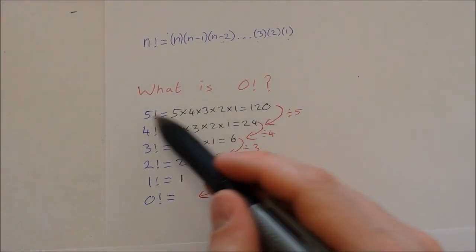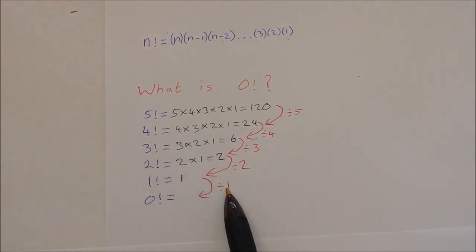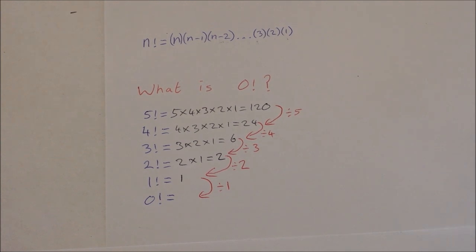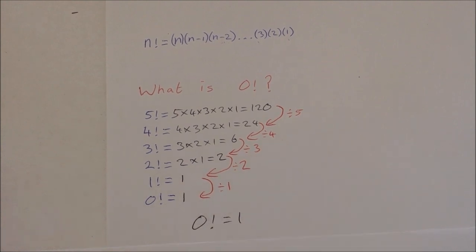So we've divided by 5 up here, by 4 up here, by 3 here, by 2 here. So I'll divide by 1 here following that pattern. 1 divided by 1 is 1. So that means 0 factorial is equal to 1. So that does come up sometimes. You'll come across a 0 factorial in a question and you just define it as 1.